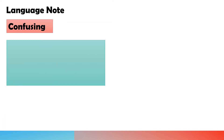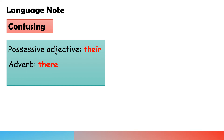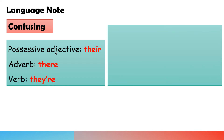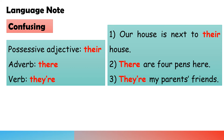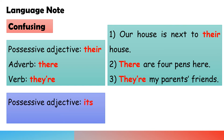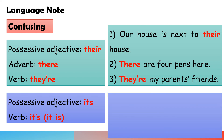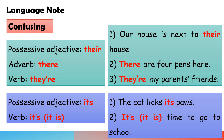Language notes: The possessive adjective 'their' is often confused with the adverb 'there' and the verb form 'they are.' For example: 1. Our house is next to their house. 2. There are four parents here. 3. They are my parents' friends. Also, the possessive adjective 'its' can be confused with the verb form 'it's.' Students need to learn the difference and different spellings: 1. The cat licks its paws. 2. It is time to go to school.